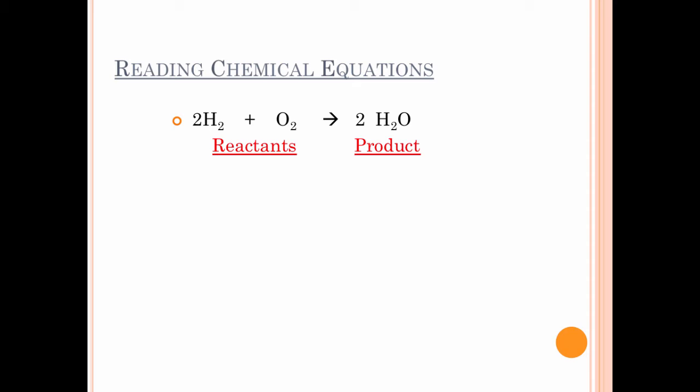The other part of a chemical equation on the right hand side is called the product. It's called the product because, like it sounds, this is what you make. So when you take hydrogen and combine it to oxygen, you make H2O, which is water. So water is formed by a chemical equation of hydrogen and oxygen. Reactants always make our products. Reactants on the left, products on the right.